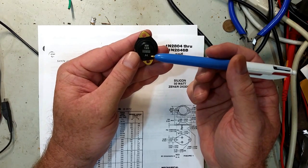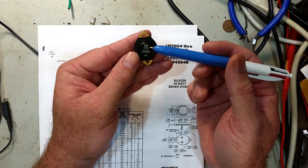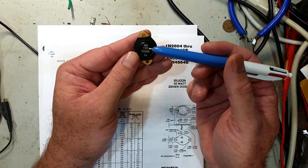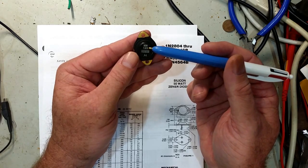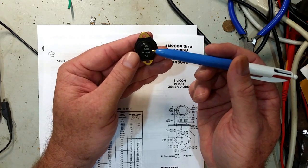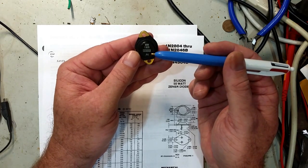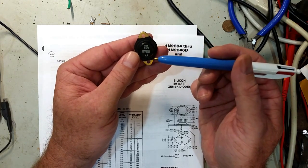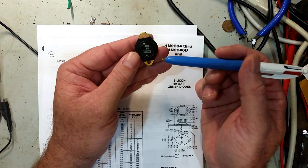So this is a 1N2805B. It's up here, it's marked 7.5, it's 7.5 volts, 7.5Z5. It's got the Motorola Batwing. I used to work for Motorola so I have a certain fondness for that.